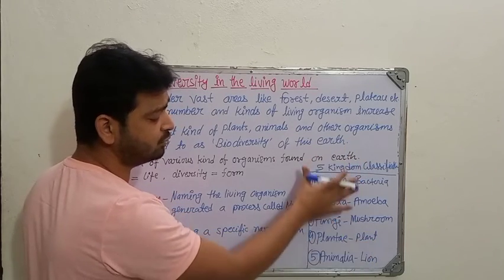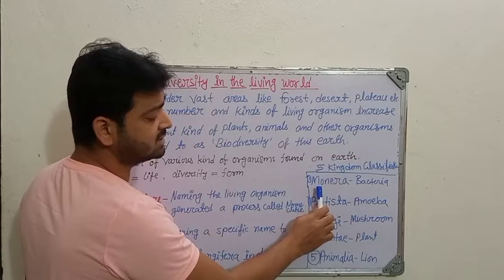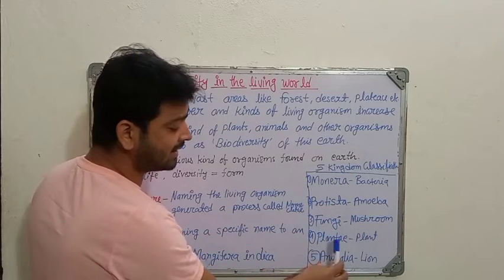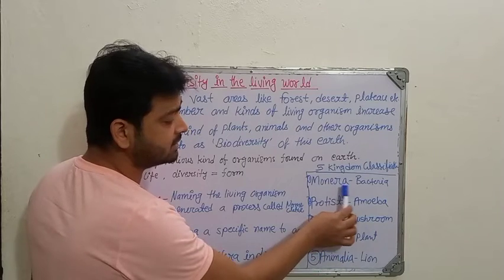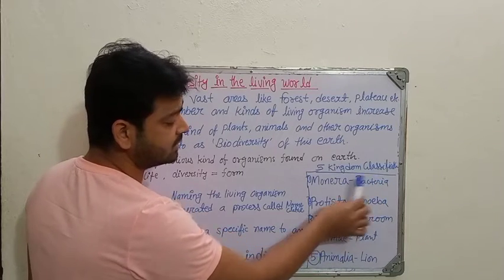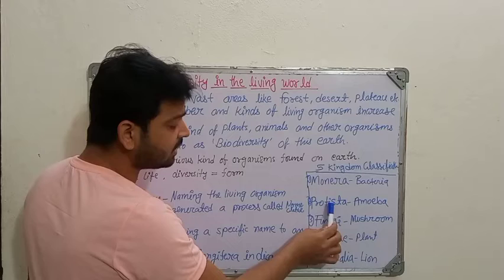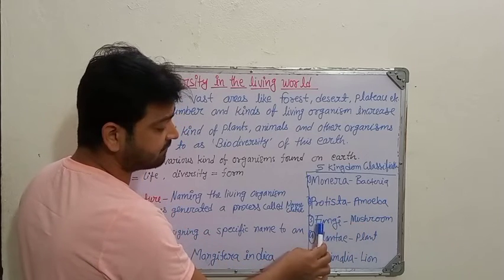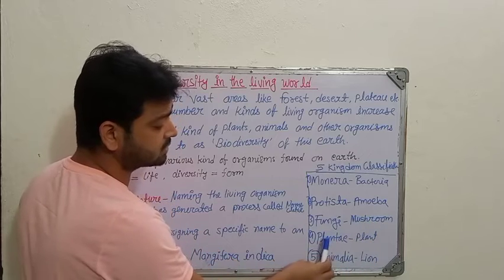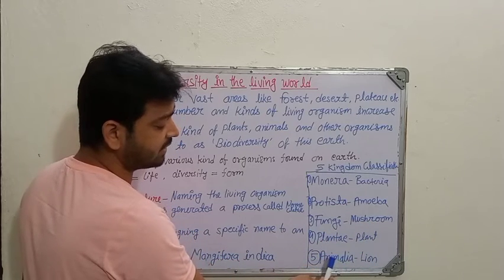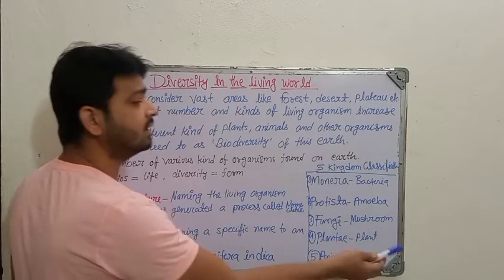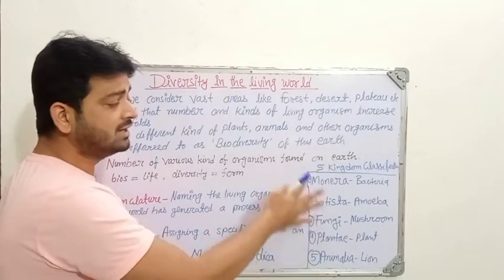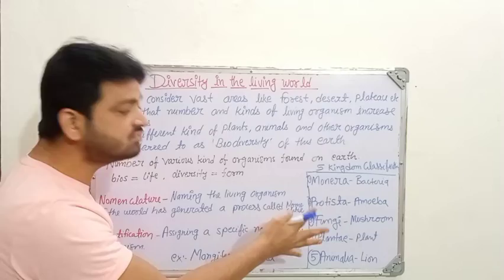There are five kingdoms of classification, which is very famous in biology. All living organisms are divided into five categories: first, Monera — which includes bacteria and other microorganisms; second, Protista — which includes amoeba-type organisms; third, Fungi — like mushrooms; fourth, Plantae — all plants; and fifth, Animalia — which includes lions and other animals. Accordingly, we divide all living organisms into these five kingdoms.